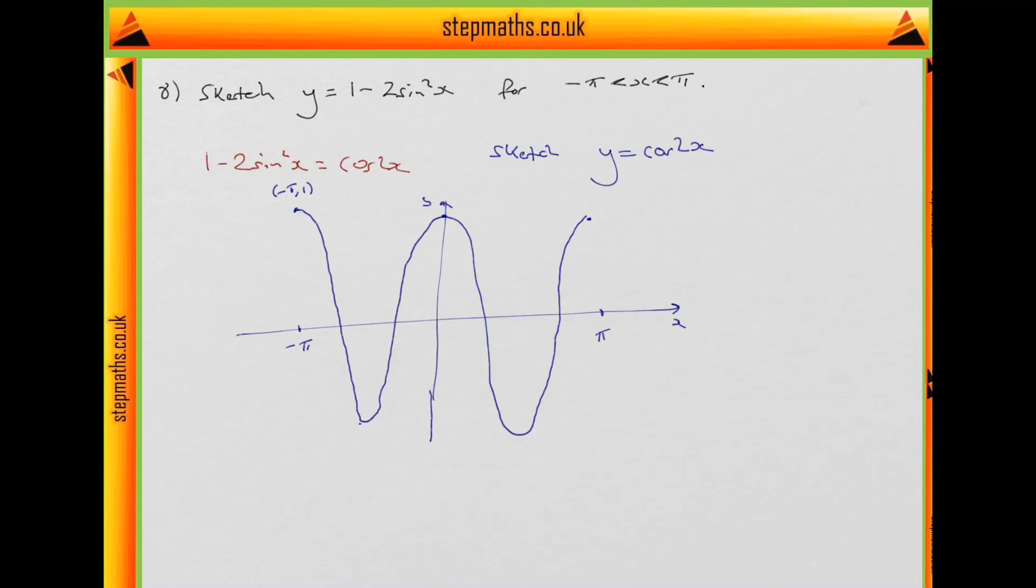But we'll just label it to make it clear. So we have down here, hitting this line here and then coming up. So that's equal to y equals minus 1.